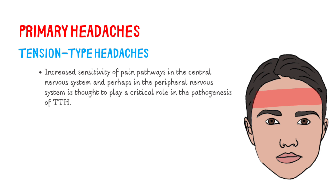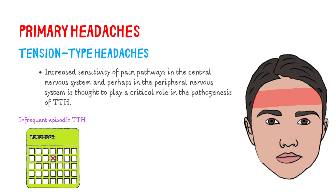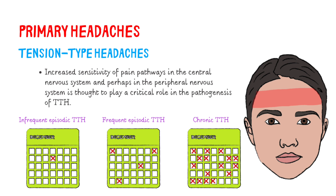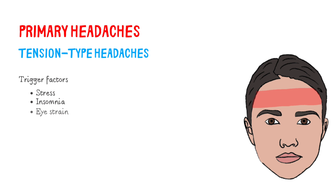Classification of TTH is important because it determines treatment. Infrequent episodic TTH has headache attacks less than one day per month. Frequent episodic TTH has headache attacks 1–14 days per month. Chronic TTH has headache 15 or more days per month. Emotional stress is the most important trigger factor.